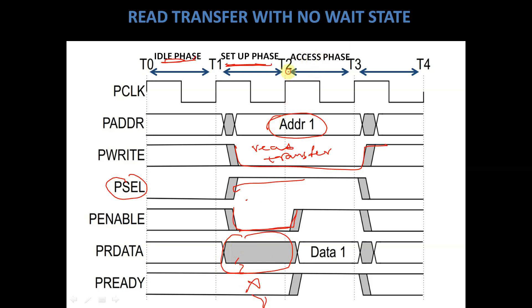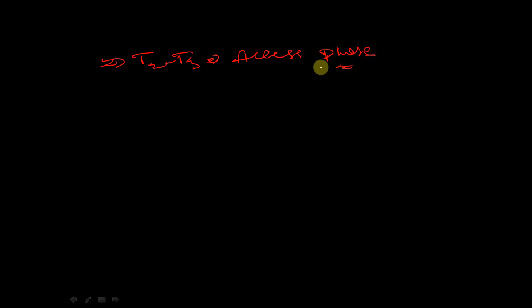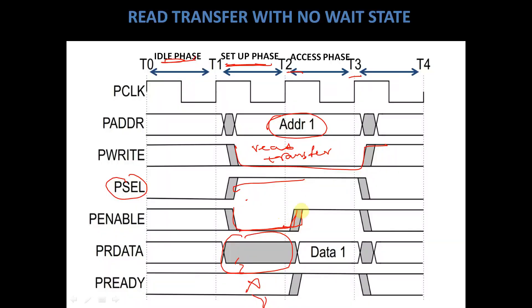During the clock cycle T2 to T3, which is also called the Access Phase, PEnable is equal to 1, which means transfer can be started. PReady is also equal to 1, and we are getting PRdata as data1. There is no wait state inserted in the clock cycle T2 to T3. Since PEnable is 1 and PReady is also 1, the slave is ready for transfer and is sending data to the bridge. This is read transfer with no wait state.